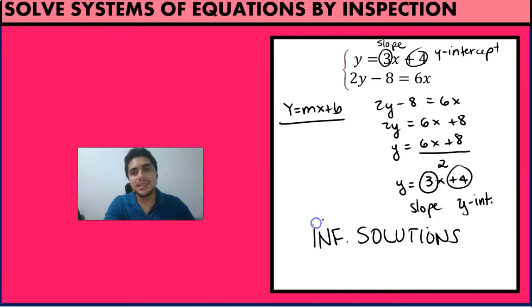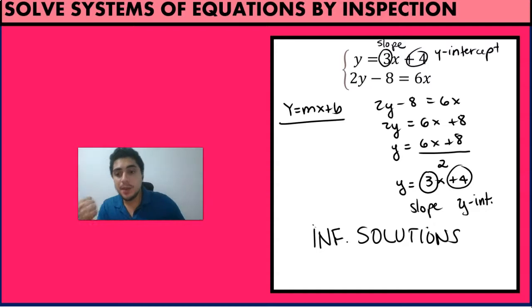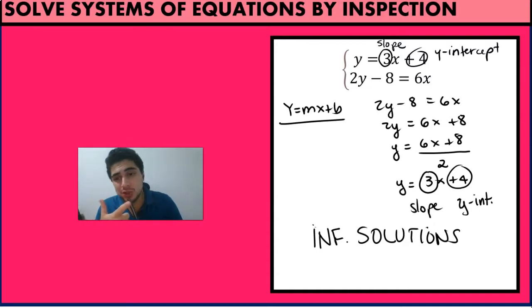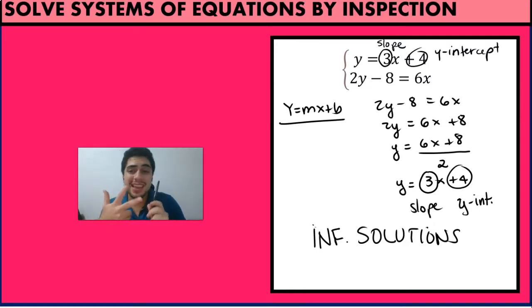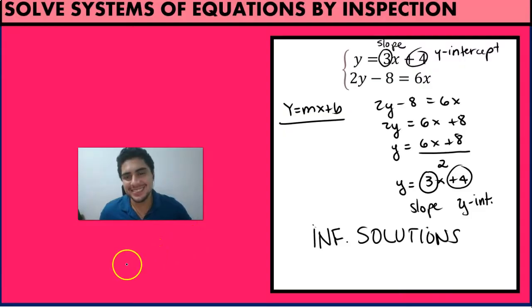So basically, whenever we're solving a system of equations by inspection, we just want to determine if it has one solution, no solutions, or infinite solutions. And that is pretty much it for today — see you guys on the next one!